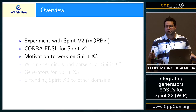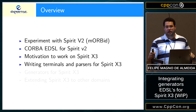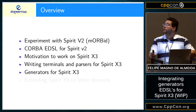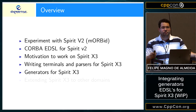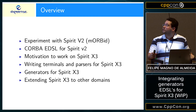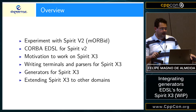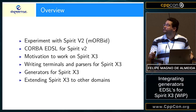We'll talk about the motivation to move to Spirit X3 instead of staying with Spirit V2, and how to write terminals and parsers for Spirit X3 so you can have a richer Spirit X3 language with other kinds of terminals, directives, and so on. This is a work in progress — writing generators for Spirit X3, since Spirit V2 had Spirit Karma but Spirit X3 doesn't have anything like that yet. We started working on generators using Boost Karma as a basis, and how we extended Spirit X3 to other domains such as CORBA.